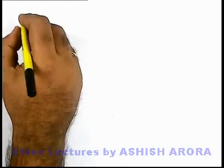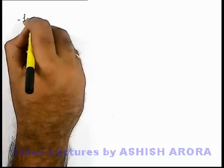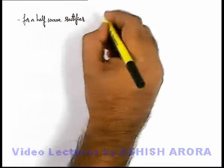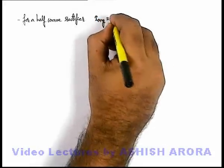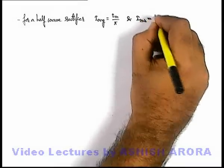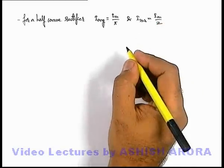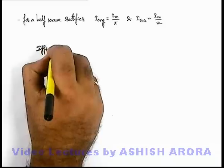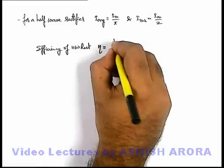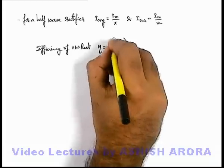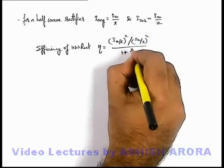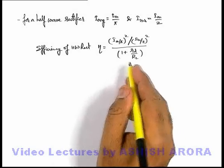Now if we talk about a half wave rectifier, we know well that for a half wave rectifier, the average current equals I_m by pi, which we already calculated, and its RMS value of current is I_m by 2, which we already calculated in previous sections. So the efficiency of the half wave rectifier is given by (I_m / pi) whole squared upon (I_m / 2) whole squared, divided by (1 + R_d / R_L), using the expression just derived.